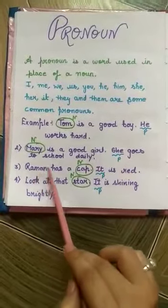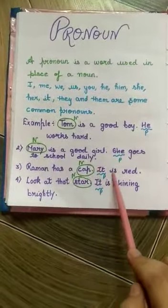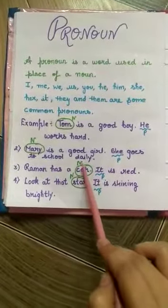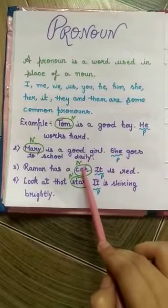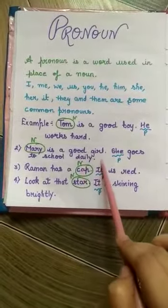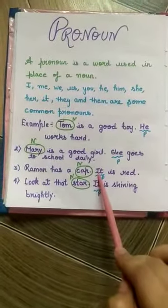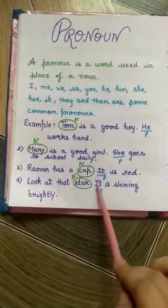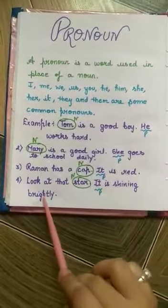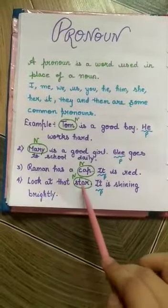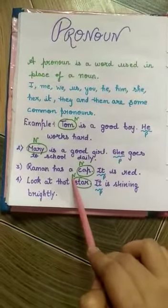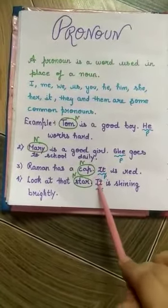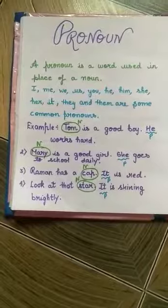Raman has a cap. It is red. In this sentence, cap is a noun and the cap is replaced by the pronoun it. Look at that star. It is shining brightly. Star is a noun and it is replaced by the pronoun it.